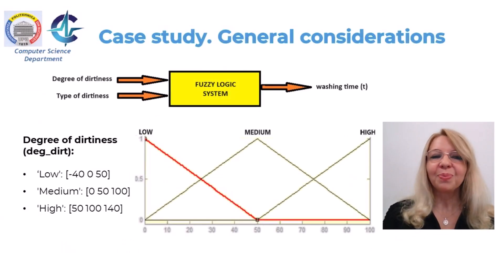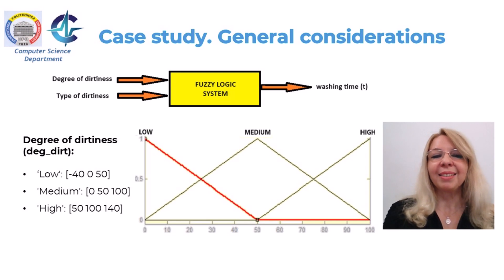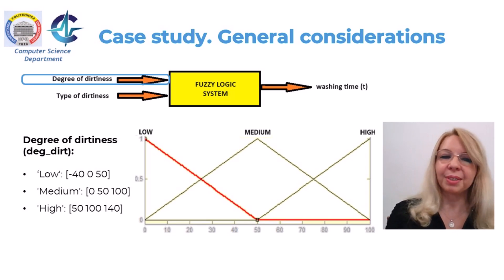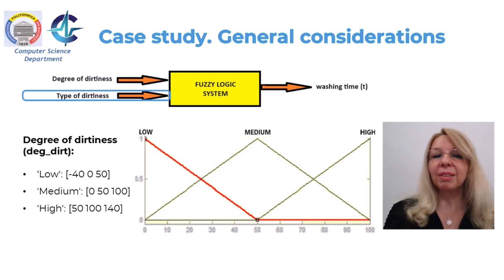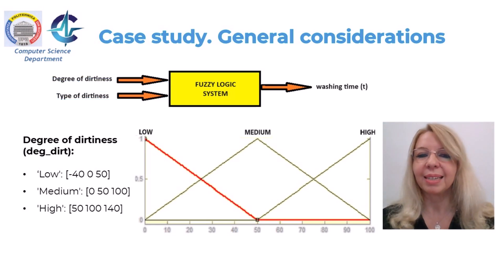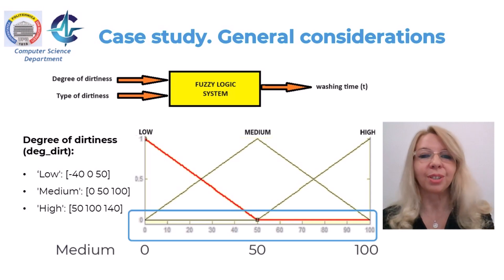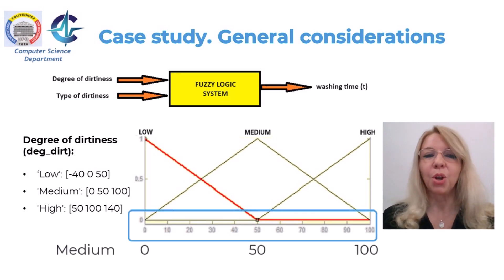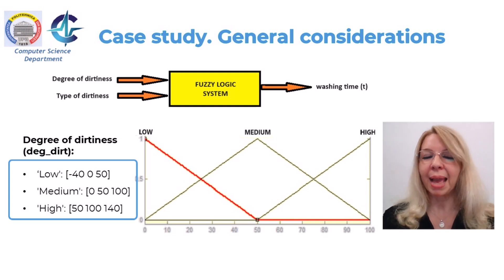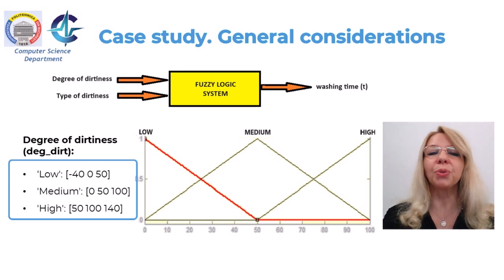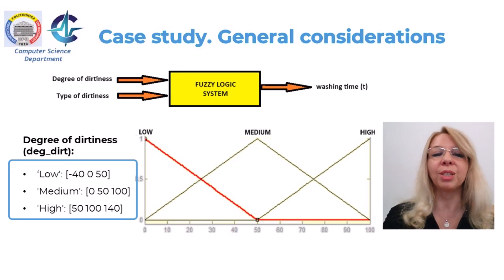As can be seen in the picture, we'll define the fuzzy sets for two input variables: degree of dirtiness and type of dirtiness. The universe of discourse for degree of dirtiness is defined as a percentage from 0 to 100 with respect to the term dirty. Three fuzzy sets are defined — low, medium, and high — in order to create a fuzzy partition over the universe of discourse.